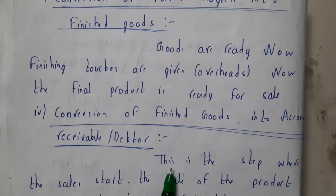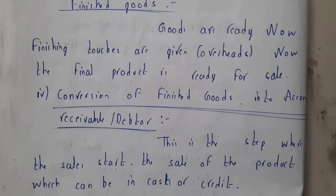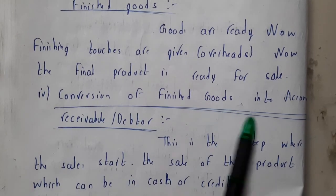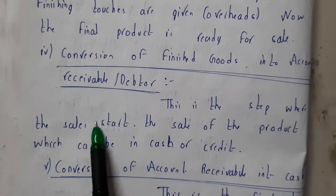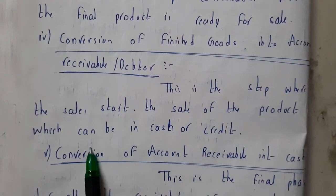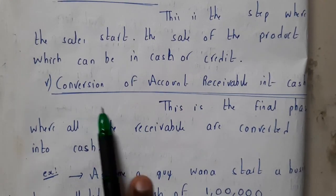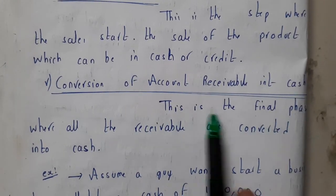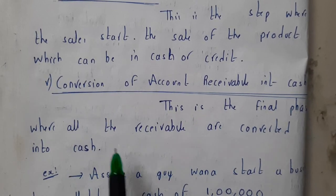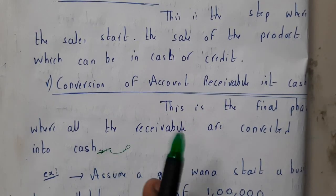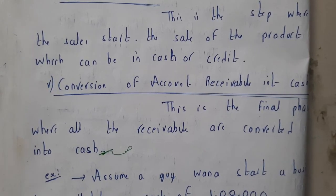Finishing touches include polishing, painting, coloring, and similar processes. The next step is the conversion of finished goods into accounts receivable or debtors — this is where sales start, and the product can be sold for cash or on credit. The final phase is the conversion of accounts receivable into cash. This cash is then reinvested into the business, completing the working capital cycle.